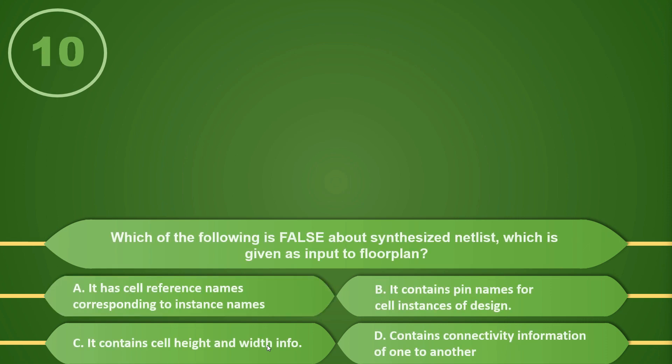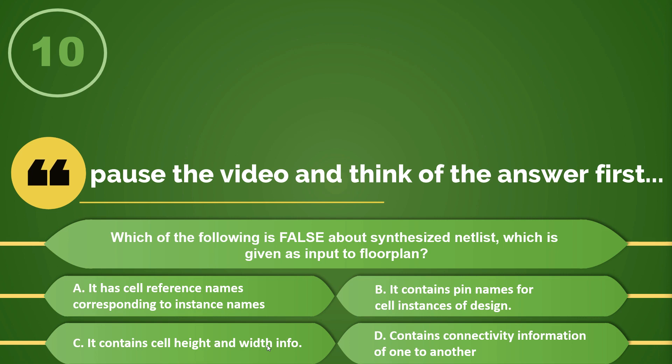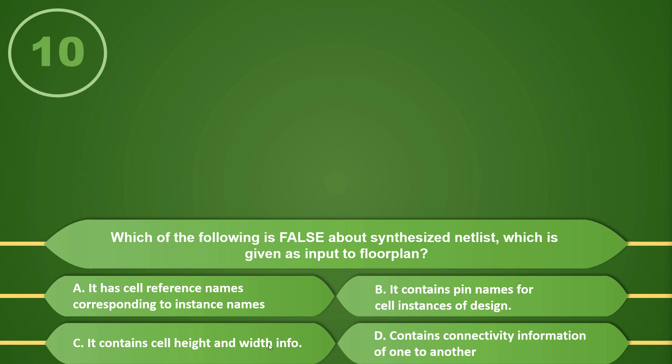The last question is: Which of the following is false about the synthesized netlist given as input to the floor planning stage? A) It has reference names corresponding to instance names, B) It contains pin names for cell instances of the design, C) It contains cell height and width information, D) It contains connectivity information. If your answer is C, you are correct — cell height and width is not present in the netlist, as that is a physical aspect. The netlist contains cell reference names, pin names, and logical connectivity.